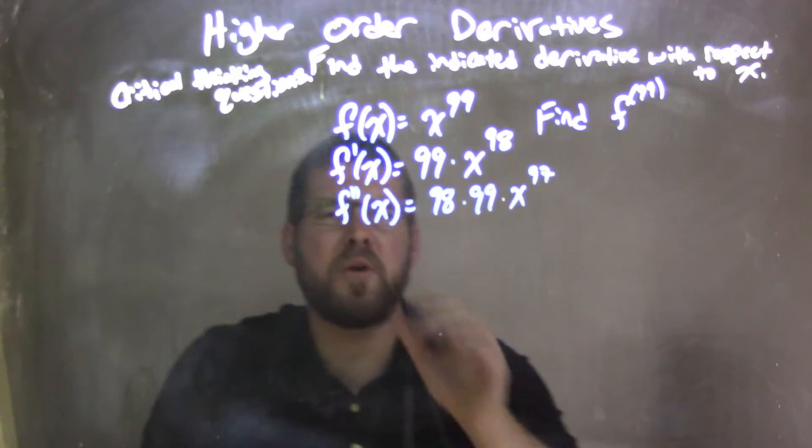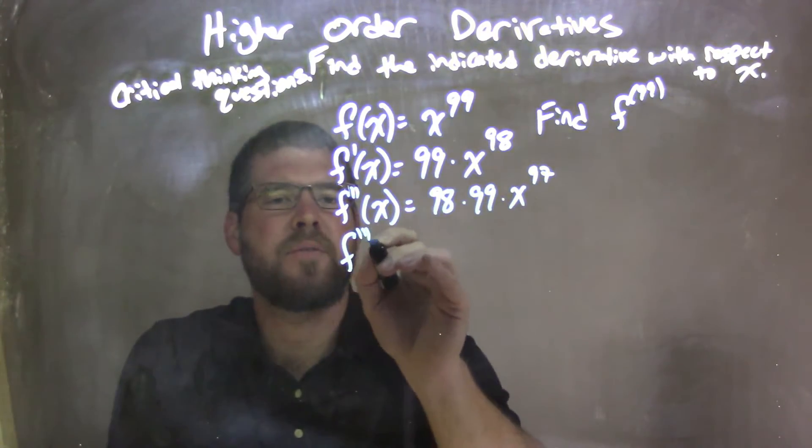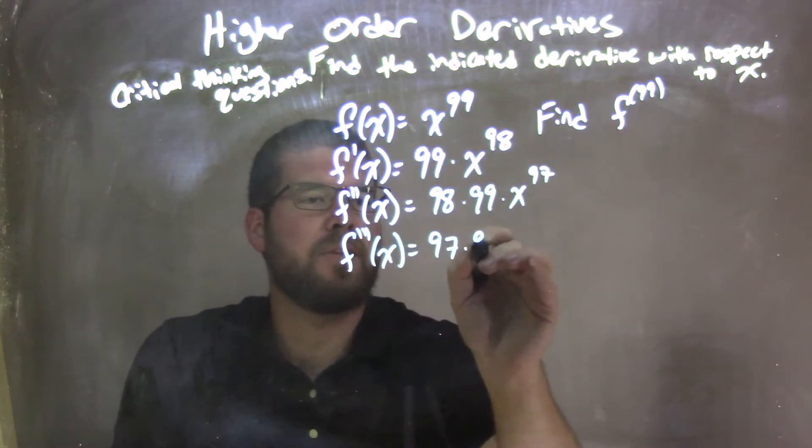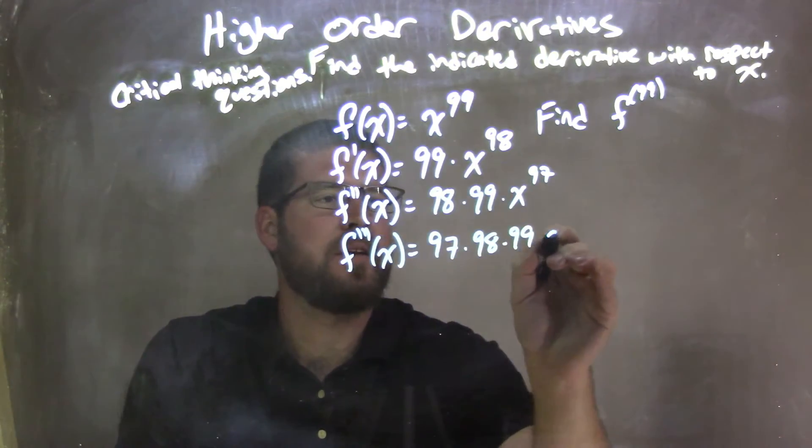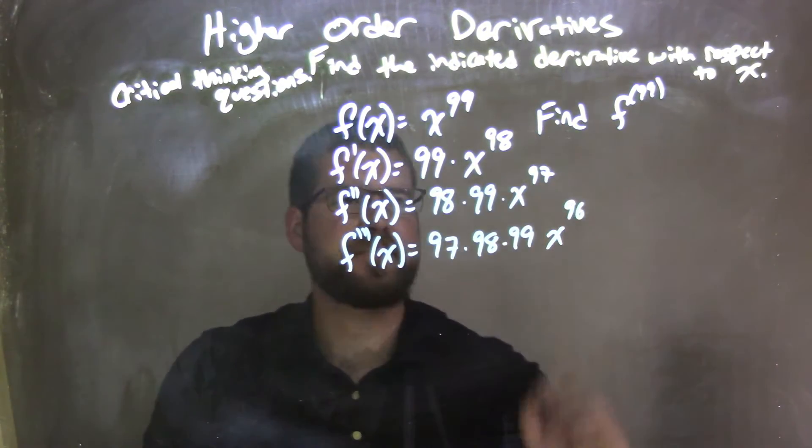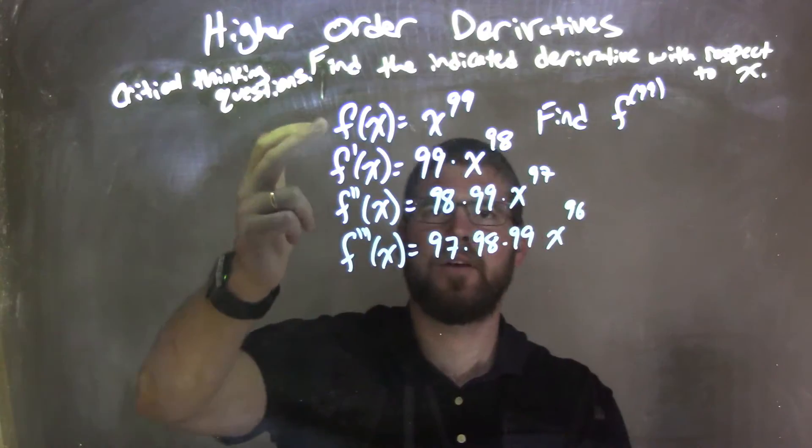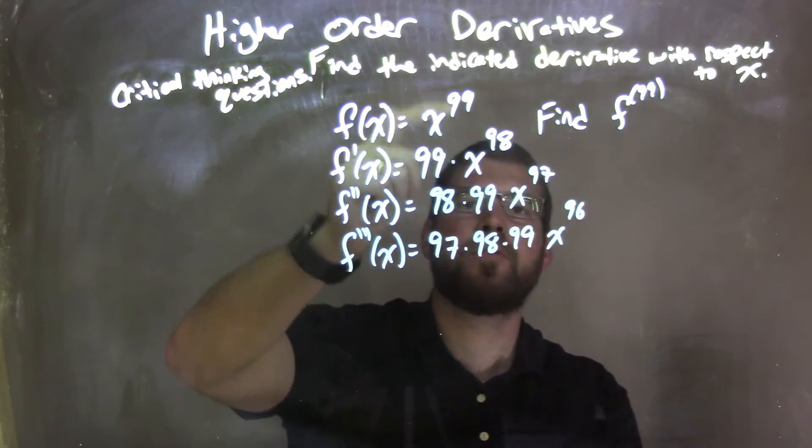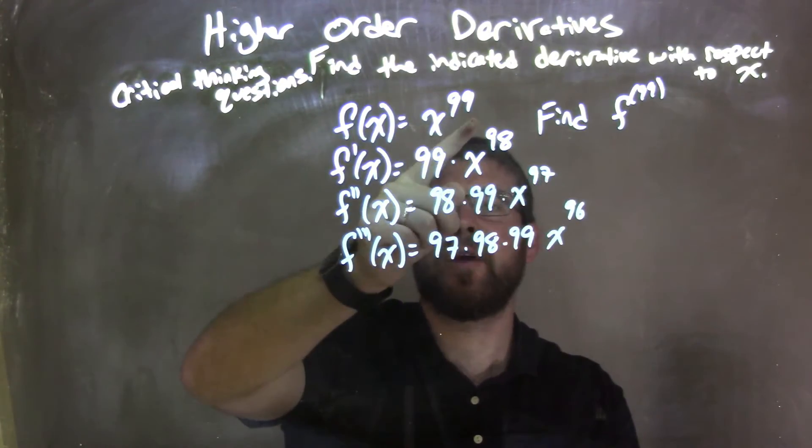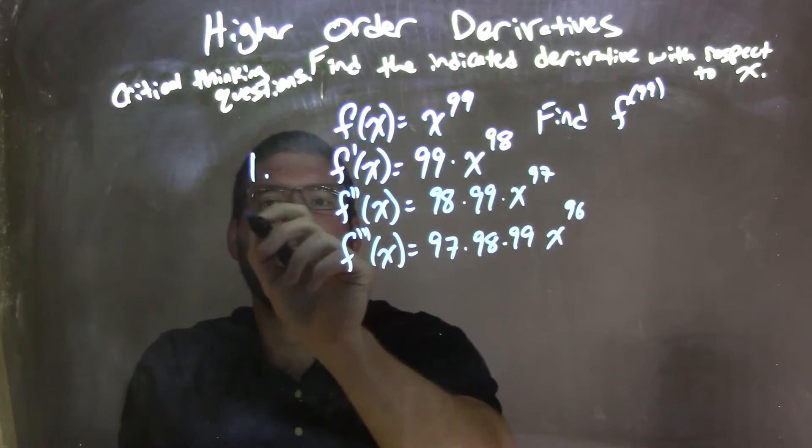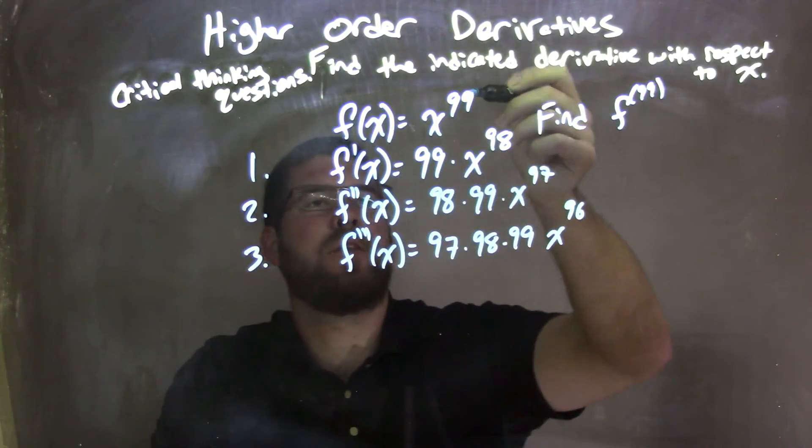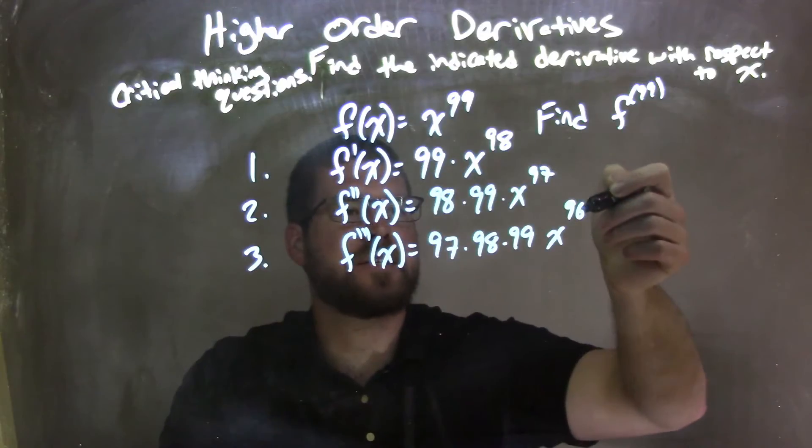Let's do a third one. f to the third derivative of x is 97 times 98 times 99 times x to the 96th power. So every single derivative, as we go down, we're subtracting the exponent by one. First derivative, second derivative, third derivative - we subtract the exponent by one, so we have 98th power, 97th power, 96th power.